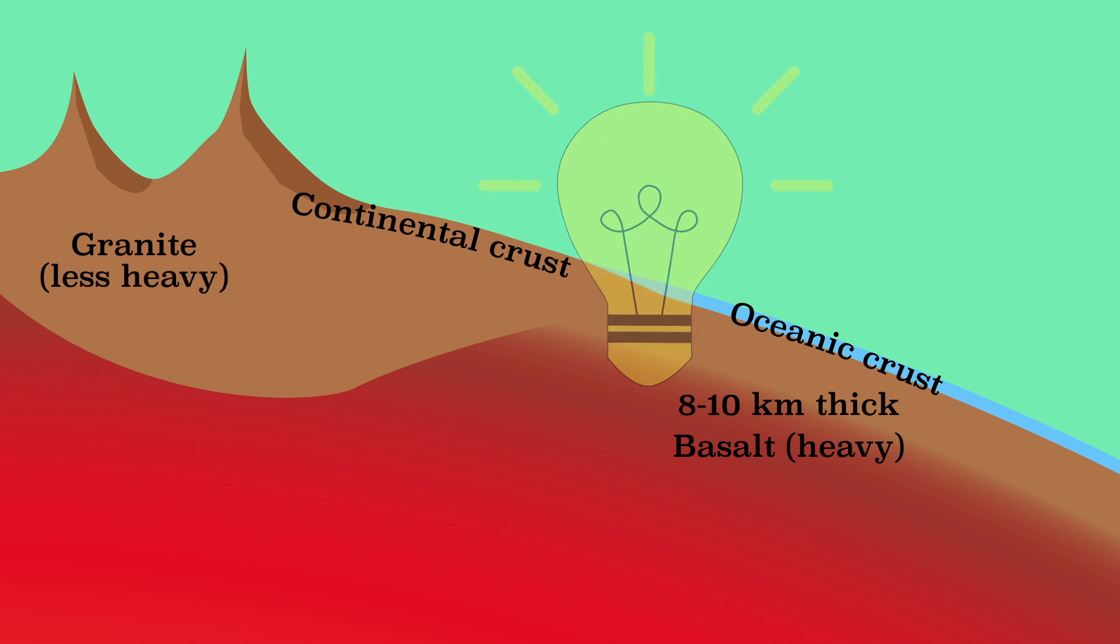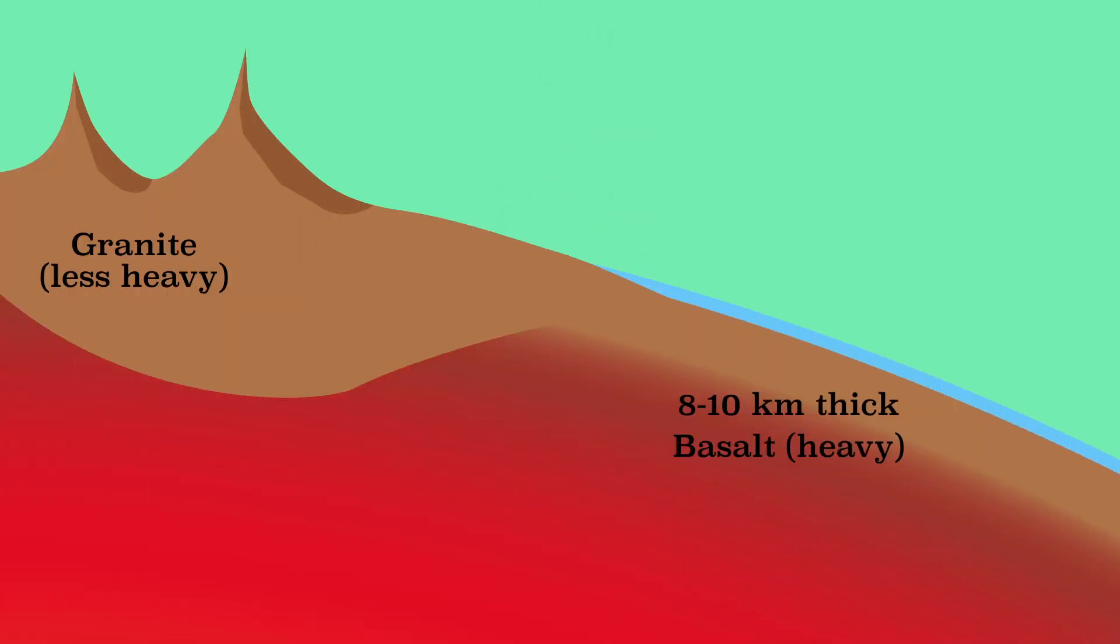The continental crust can become much thicker than the oceanic crust. The crust floats, as it were, on the deformable asthenosphere, just like an ice cube. The larger the ice cube, the more ice there is also underwater. And the same applies to the crust. The higher the earth's crust, the larger the part of the crust that is in the asthenosphere.